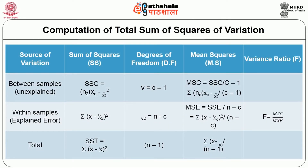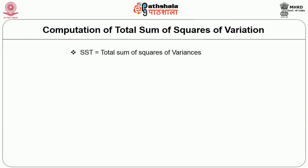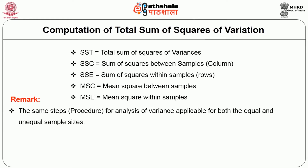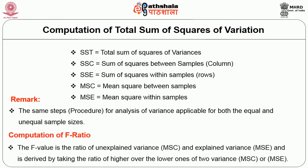This is the analysis of variance table. The first column shows the source of variation, the second column shows the sum of squares, the third shows degrees of freedom, the fourth indicates mean sum of squares, and the last column shows the F-value. The F-value is the ratio of explained variance (MSC) and unexplained variance (MSE), derived by taking the ratio of the higher over the lower of the two variances.